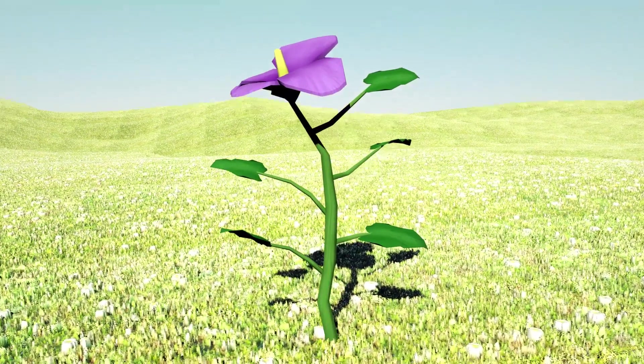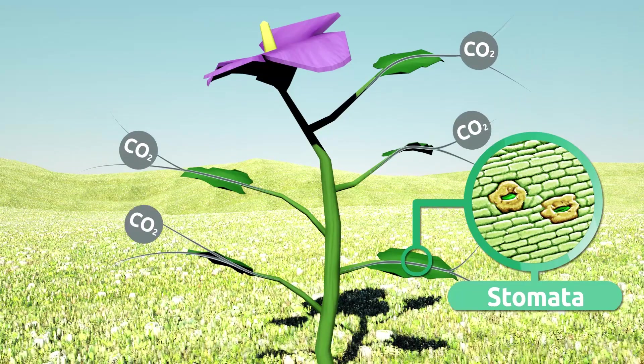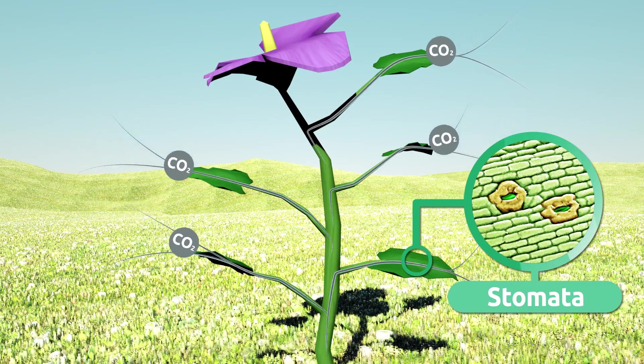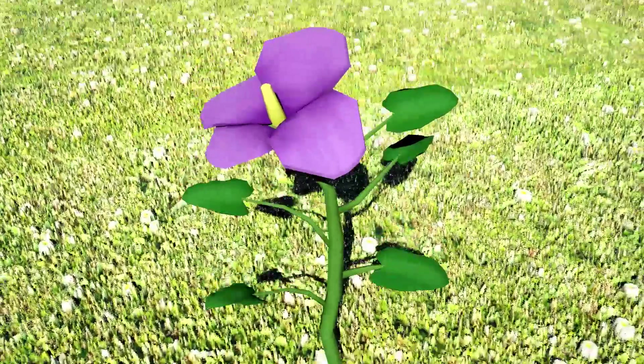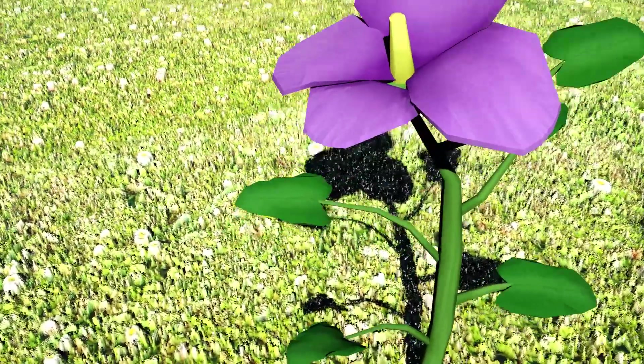Carbon dioxide is absorbed through tiny pores called stomata. And right here, in the leaves, is where photosynthesis actually takes place.